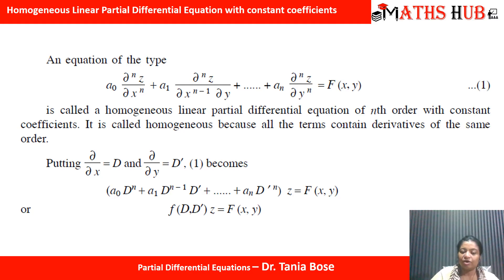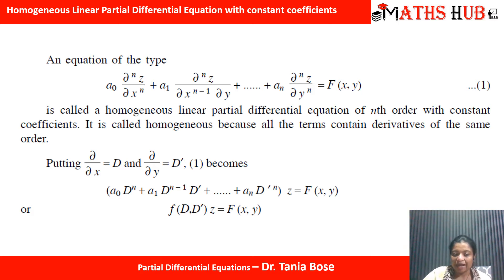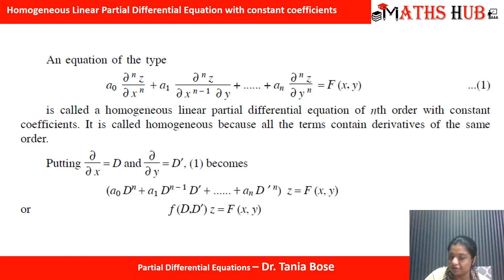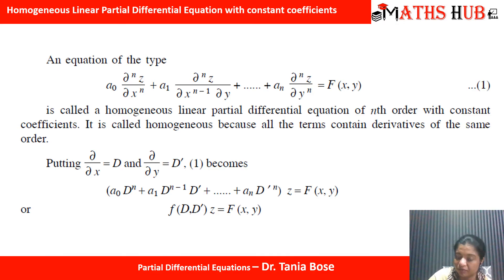To convert this into symbolic form, we substitute ∂/∂x = D and ∂/∂y = D'. The equation then becomes: (a₀Dⁿ + a₁Dⁿ⁻¹D' + ... + aₙD'ⁿ)z = f(x, y), which we write as F(D, D')z = f(x, y).